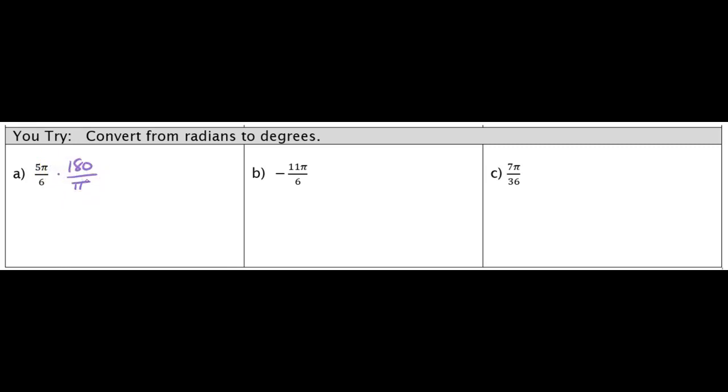And the way that I remember which one is which is I remember that if I want to go to degrees, I want the pi's to cancel. So that means I want to have the pi that's in the numerator and the pi in the denominator to cancel each other out. So that's kind of how I remember which one is which.